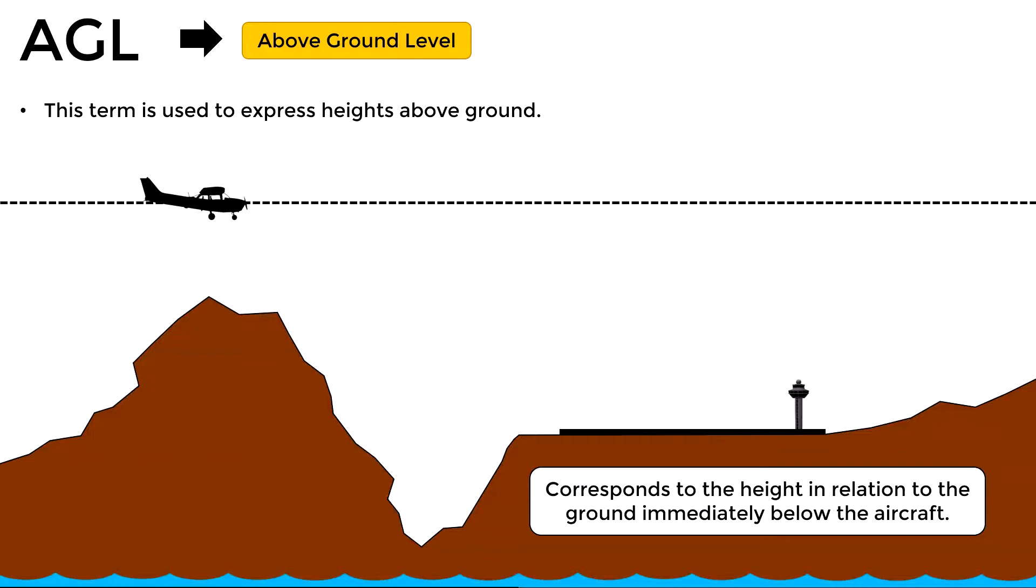For example, the AGL height of this aircraft is measured in relation to the peak of the mountain since it corresponds to the terrain immediately below the aircraft at that moment. Now if the aircraft maintains level flight and passes over this valley, its AGL height will actually be greater since the height is now being measured in relation to the valley. If the aircraft keeps flying and passes over this airport, its AGL height will change once again.